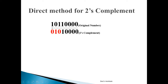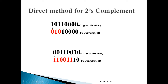One more example. From LSB we see 0, 0, 0, 0, and then 1 — all the zeros are written as they are, and this 1 is also written as it is. After the 1 is found, all bits after it are reverted: this 1 changes to 0 and this 0 changes to 1. Another example: the original number has 0 and 1 written as they are, and after the 1, all bits are reverted. This is how you directly find the 2's complement of a number.